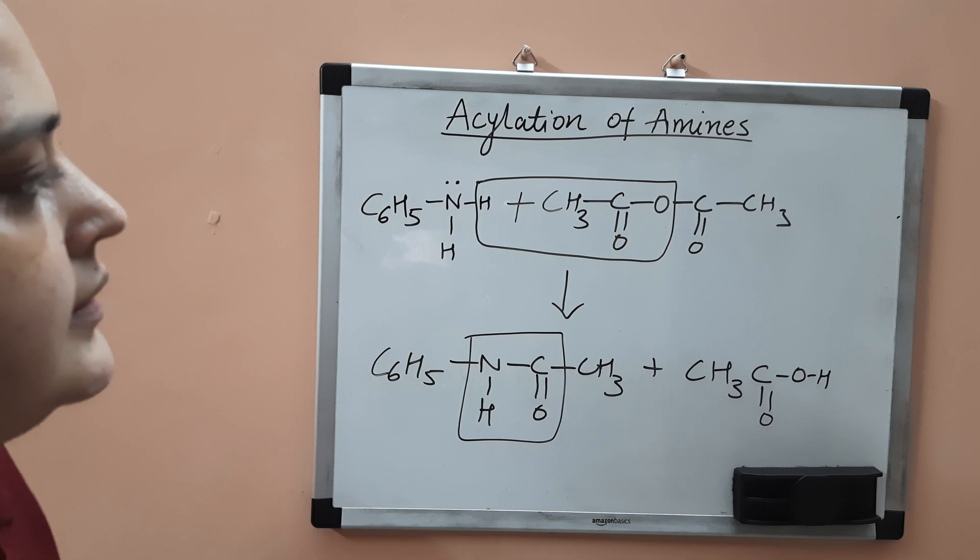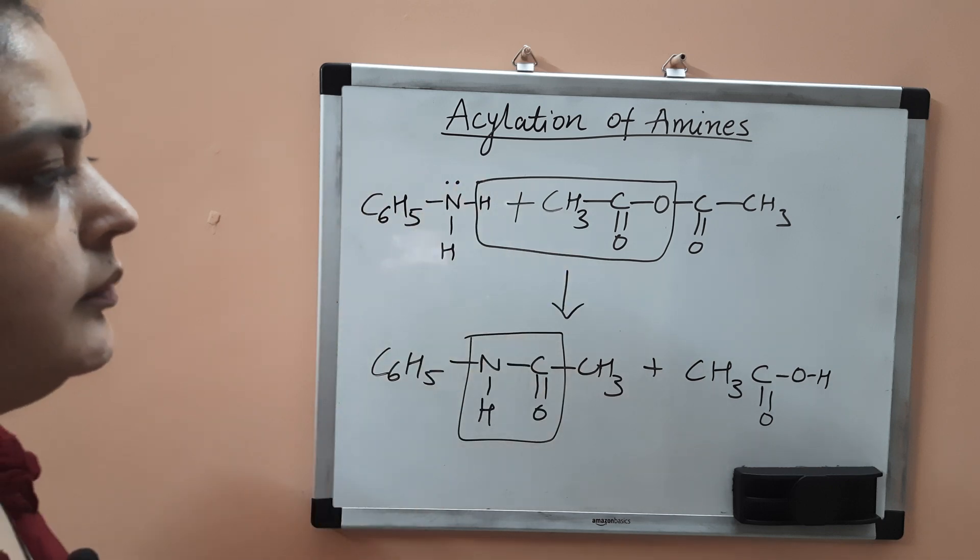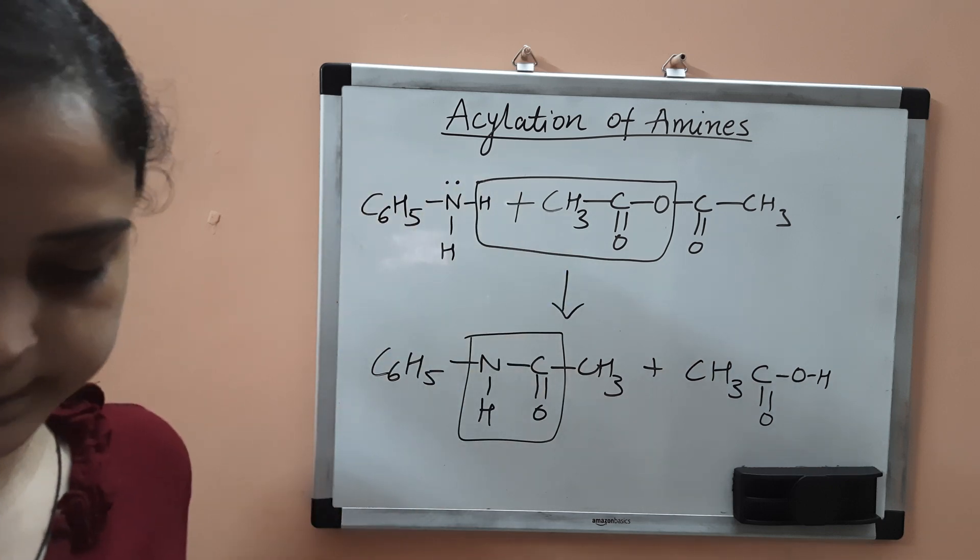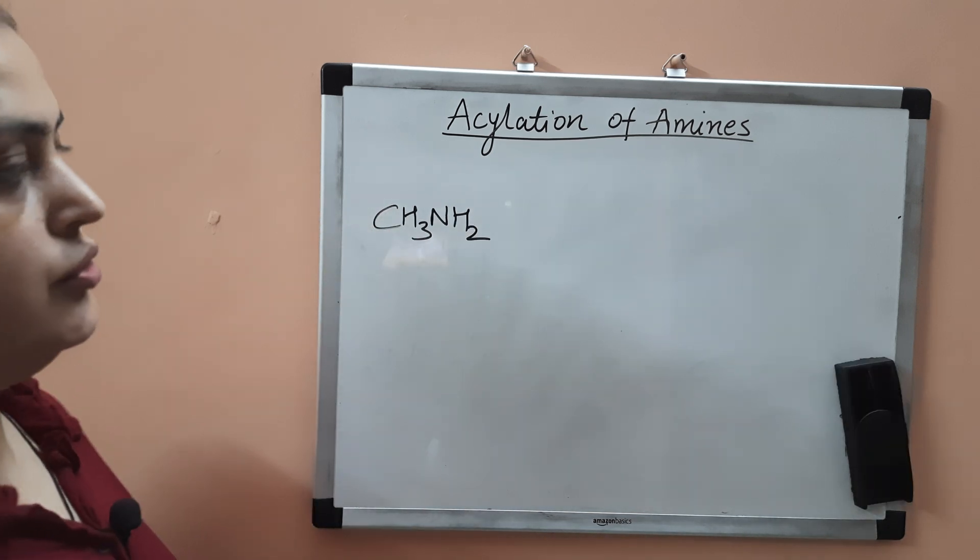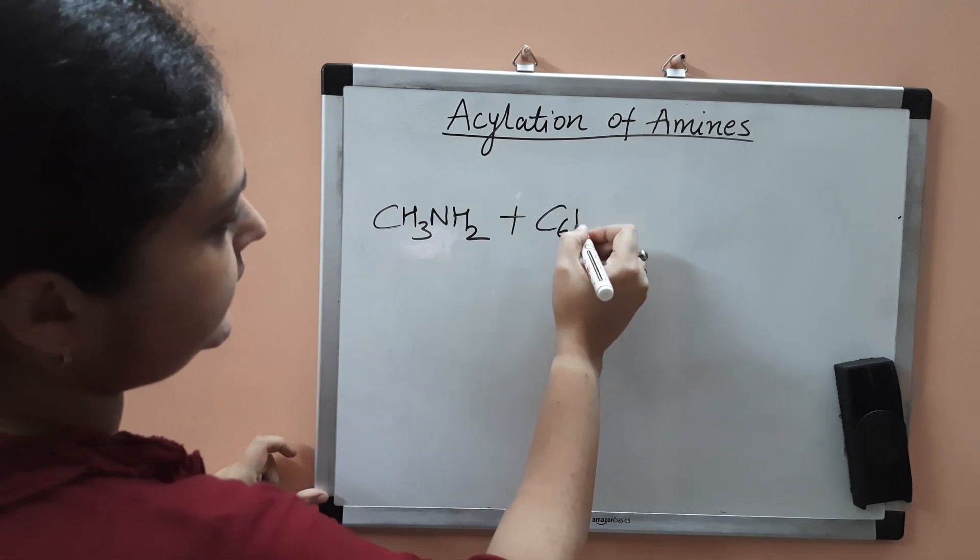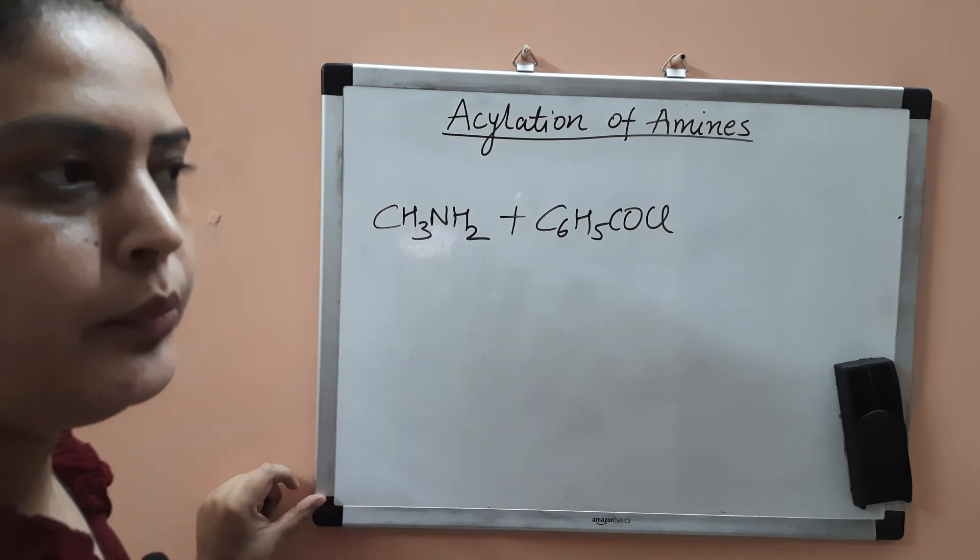Now if there is benzoyl chloride and the reaction of amine with benzoyl chloride, what will be the product? This is methane amine CH3NH2. If you react it with benzoyl chloride C6H5COCl, what will be the product?